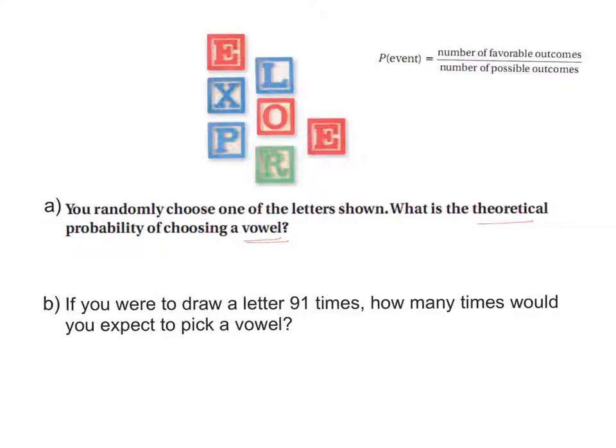So I know my vowels are A, E, I, O, and U, so up top I've got an E, an O, and another E. So I have three. The probability of picking a vowel is three vowels out of one, two, three, four, five, six, seven total possible outcomes. So we have a three-sevenths chance of picking a vowel.